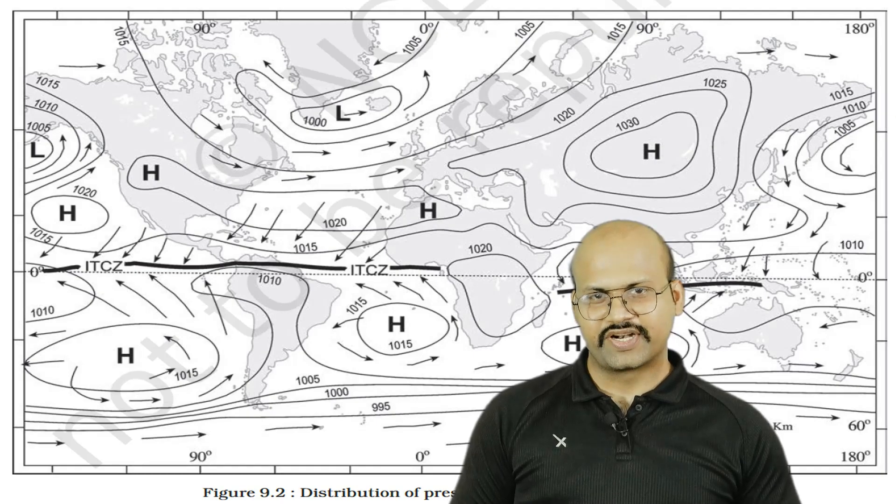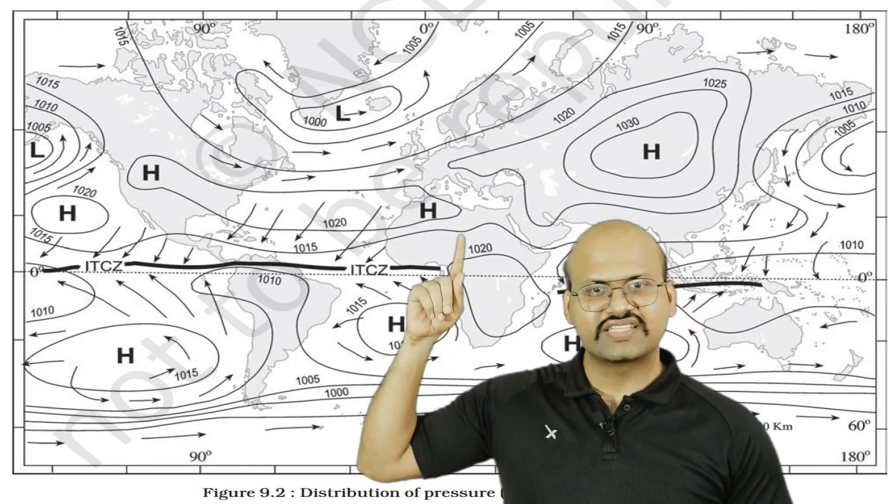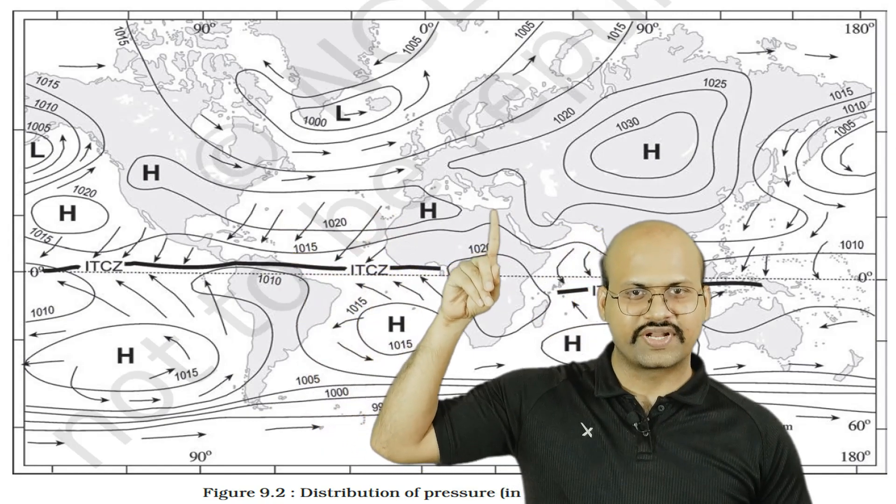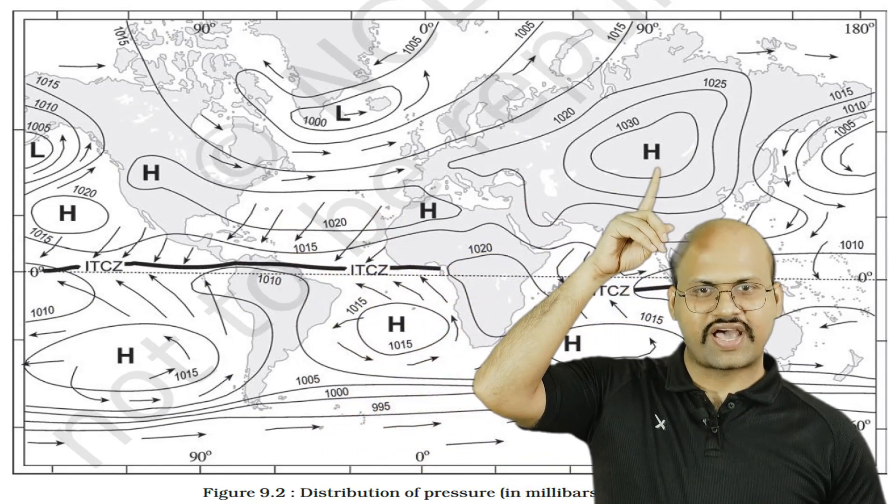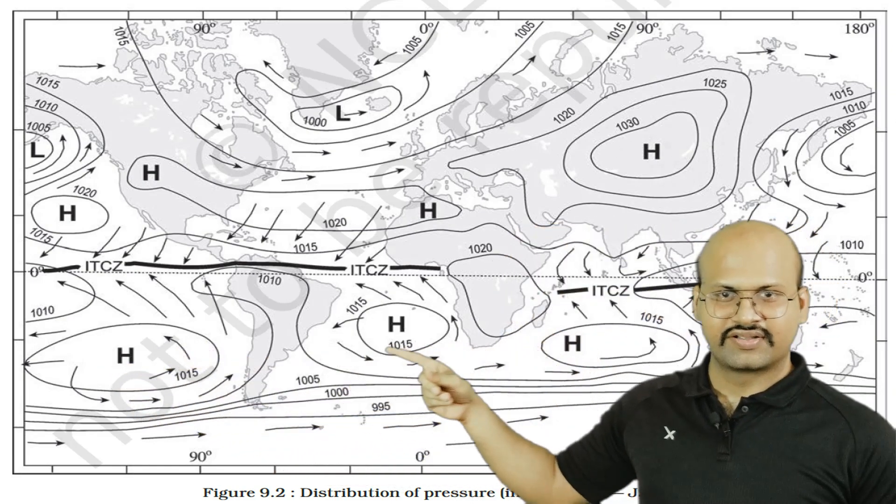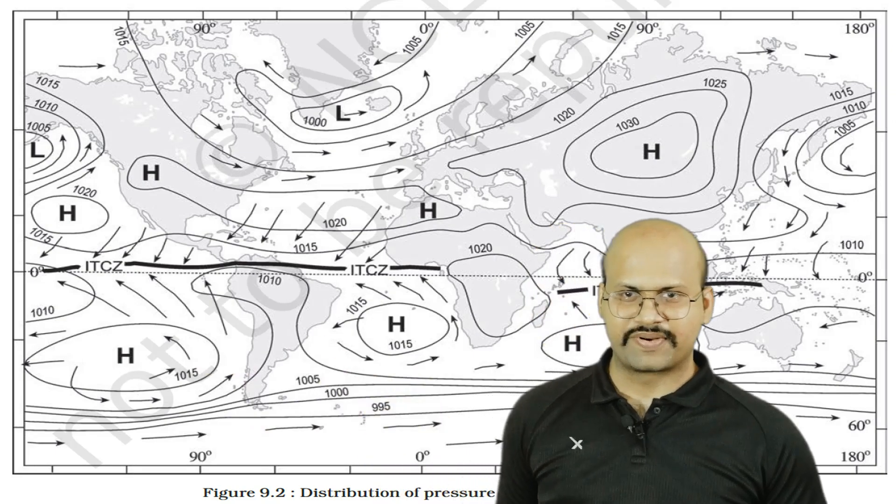Here you can see a pressure belt. We can see here that this high pressure is distributed only over these regions. Again there is some low pressure here and then we see again a rise of high pressure. Similarly, over here we do not see a continuous high pressure belt, but we see a discontinuous high pressure belt.